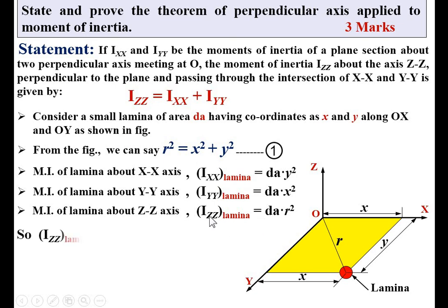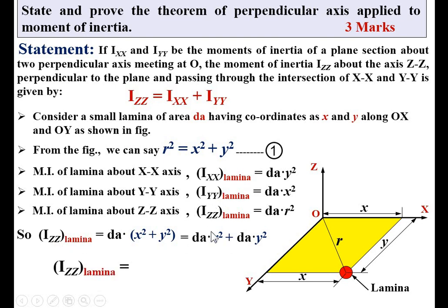Now substitute the value of r² from equation number one: I_ZZ = dA × (x² + y²). Opening the bracket: I_ZZ = dA·x² + dA·y². Since dA × x² equals I_YY, and dA × y² equals I_XX, we get I_ZZ = I_YY + I_XX, which can be written as I_ZZ = I_XX + I_YY. This equation is known as the perpendicular axis theorem.